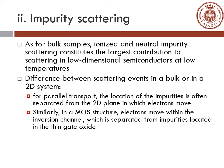There is a key difference between scattering in 3D bulk semiconductors and a 2D system. For parallel transport, the location of impurities is often separated from the 2D plane in which electrons move. For example, in a modulation-doped heterostructure, charged donors are located in the aluminum gallium arsenide, while electron motion takes place in a separated region in the gallium arsenide parallel to the interface. Similarly, in a MOSFET structure, electrons move within the inversion channel which is separated from impurities located in the thin gate oxide.